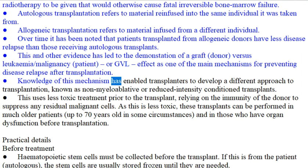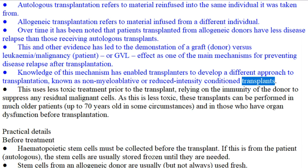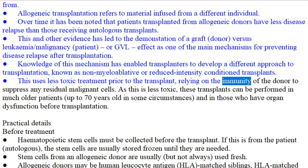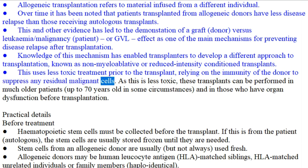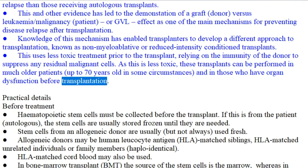Knowledge of this mechanism has enabled transplants to develop a different approach to transplantation, known as non-myeloablative or reduced-intensity conditioning transplants. This uses less toxic treatment prior to the transplant, relying on the immunity of the donor to suppress any residual malignant cells. As this is less toxic, these transplants can be performed in much older patients, up to 70 years old in some circumstances, and in those who have organ dysfunction before transplantation.